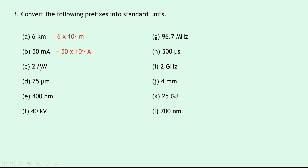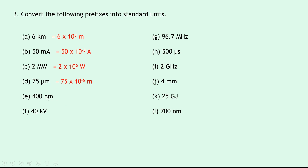Two megawatts — mega is times a million or times 10 to the power of 6, so this is written as 2 times 10 to the power of 6 watts. Part d: 75 micrometers — replacing micro with times 10 to the minus 6 gives 75 times 10 to the minus 6 meters. Part e: 400 nanometers — nano means times 10 to the power of minus 9, so we get 400 times 10 to the minus 9 meters.